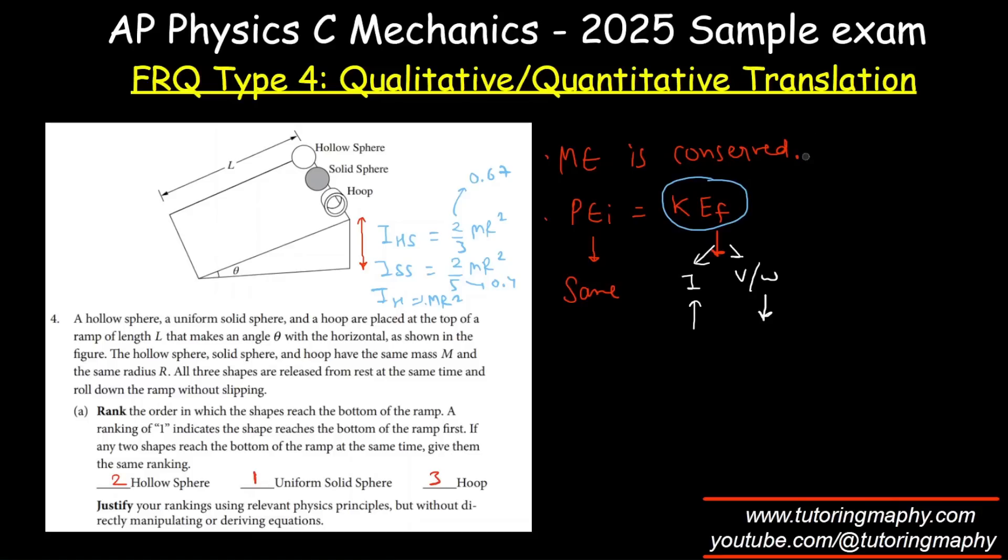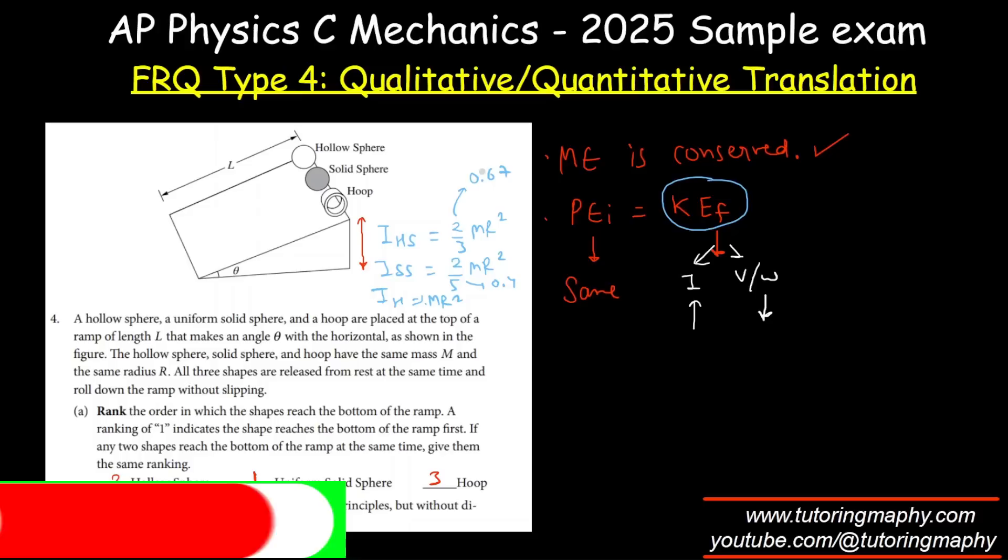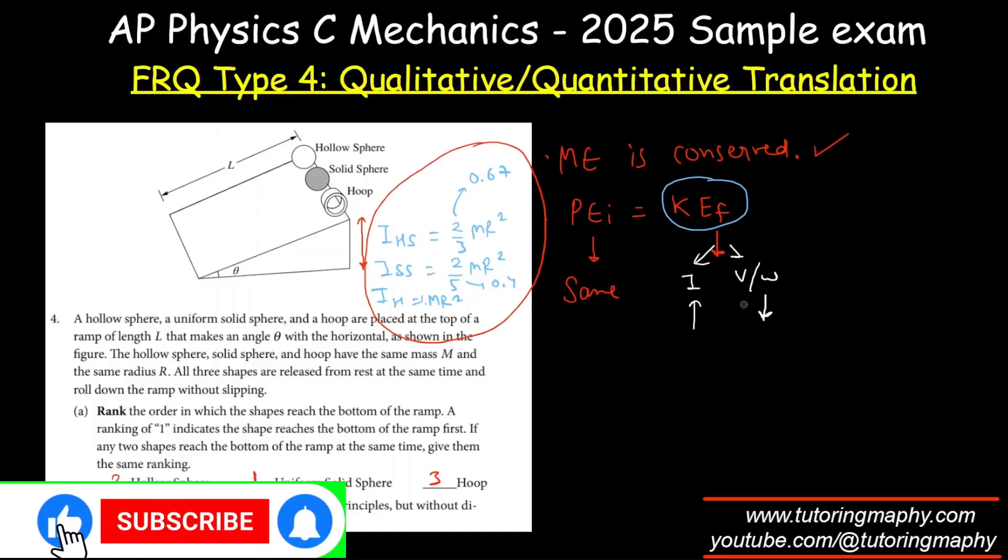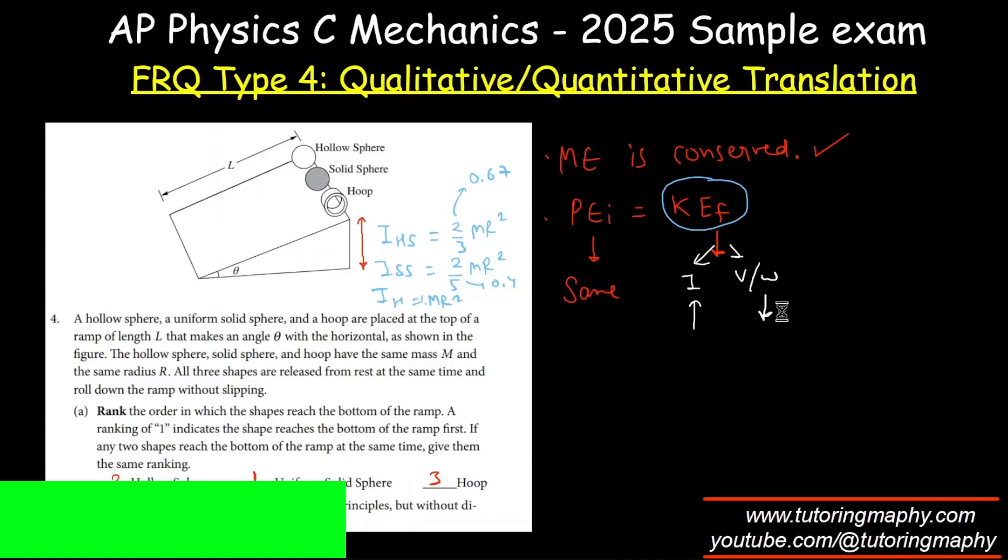So first we are going to say that the mechanical energy is conserved. Then we are going to explain in the same fashion that initial potential energy is same, kinetic energy, and we are going to also write the moment of inertia of all this, and just like comparing I and omega, we are going to justify that. This is more about qualitative.